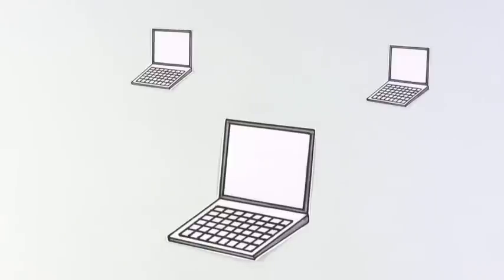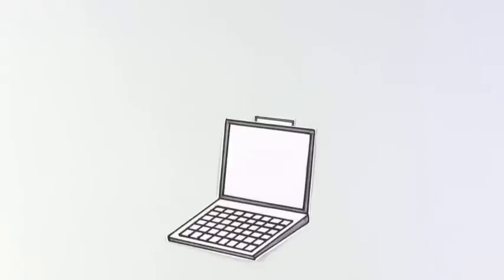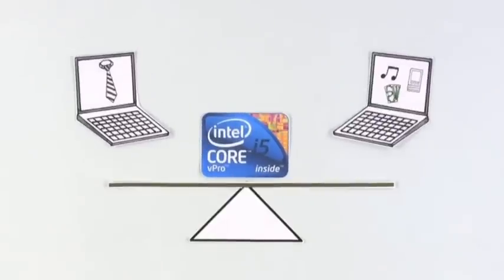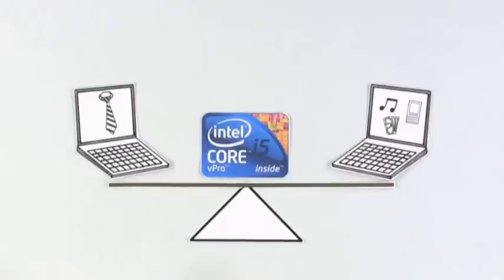Soon Bryce learned about a way for two or more computers to be run on a single computer, something called virtualization. Using a PC with an all-new Intel Core vPro processor, he can strike the perfect balance by making it possible to have control and flexibility at the same time.